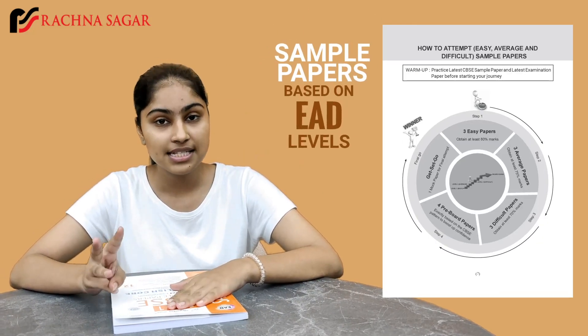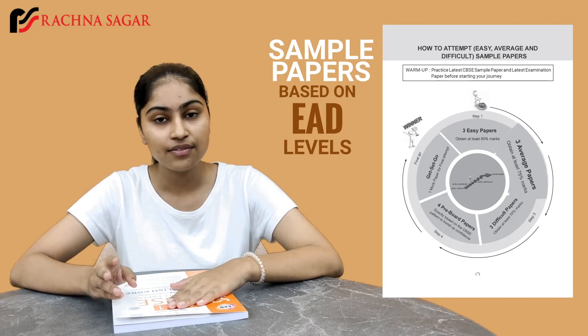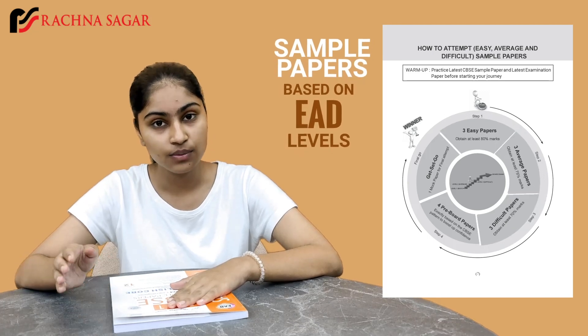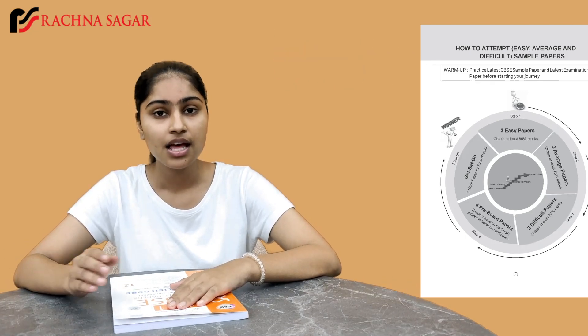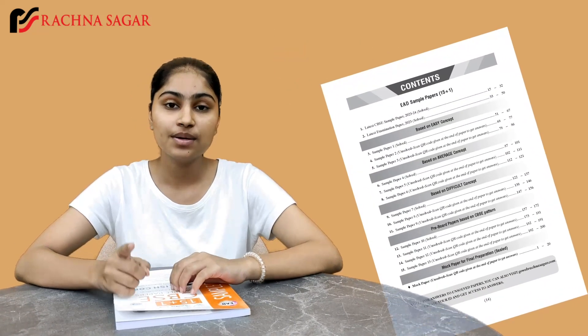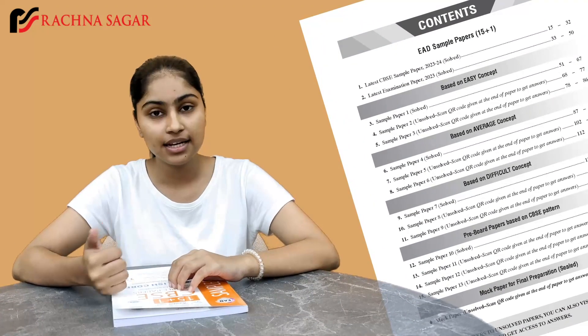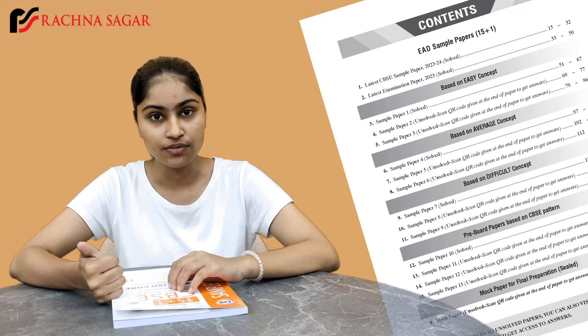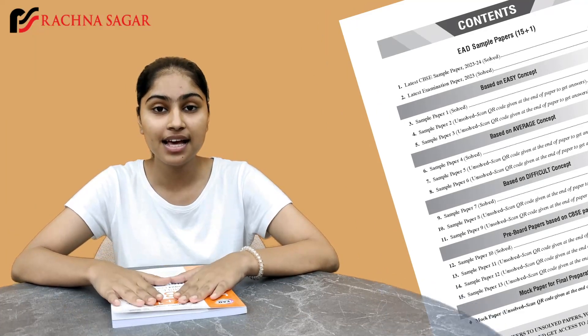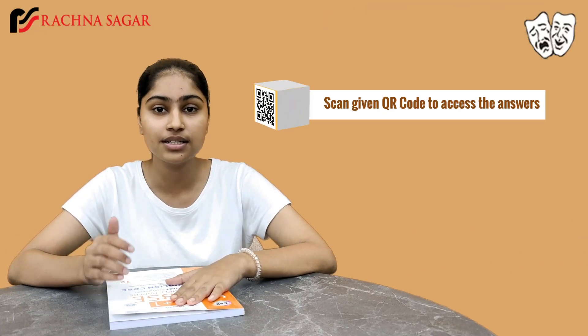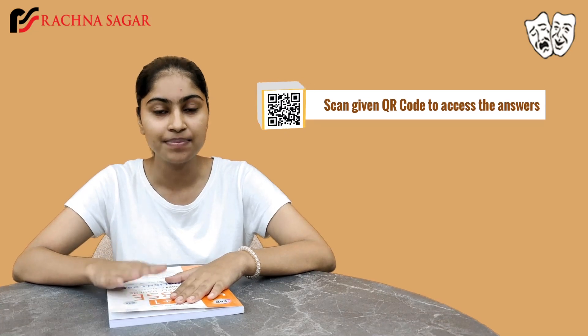The book consists of 3 easy, 3 average and 3 digital question papers, while one of them is solved and the other 2 are unsolved. You can find the answers of unsolved questions by scanning the QR code provided.